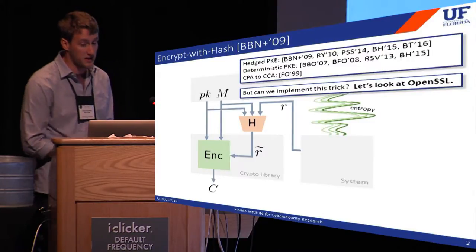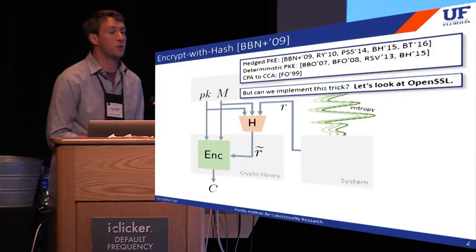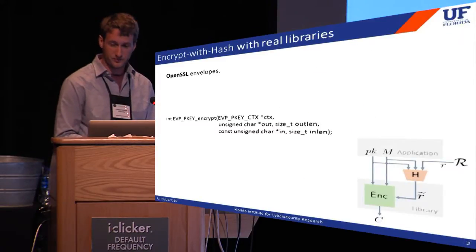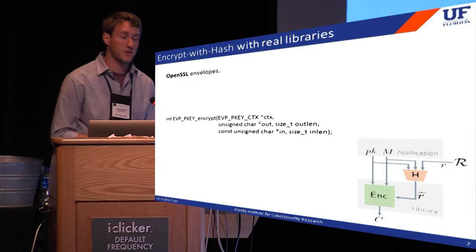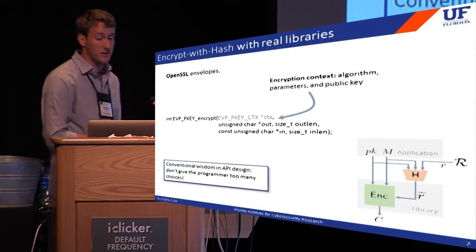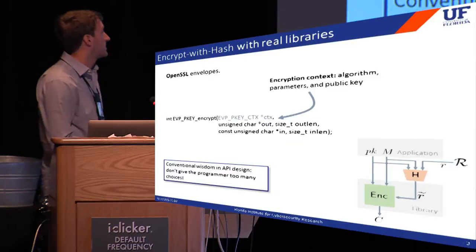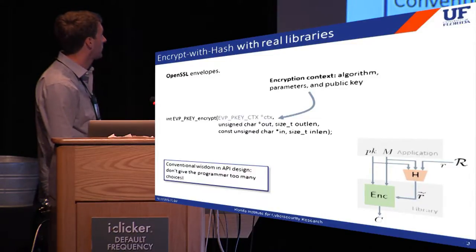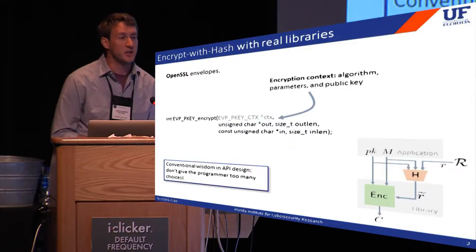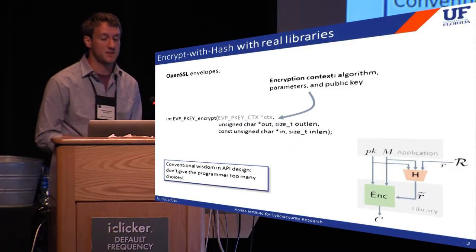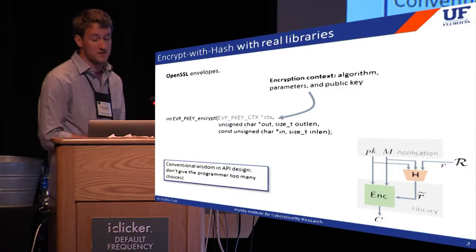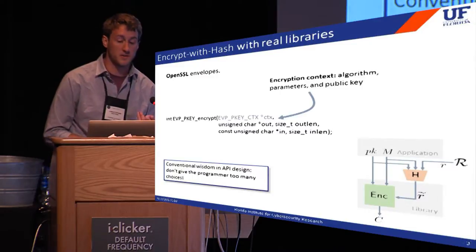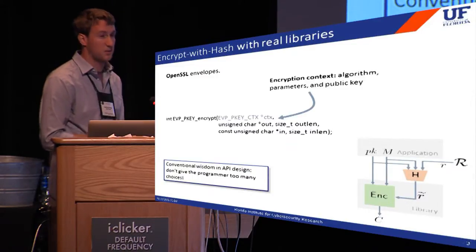To start, we looked at OpenSSL, perhaps the most widely deployed crypto library in use today. At its highest level, OpenSSL provides an abstraction for public key encryption, sometimes called secure envelopes. The first input to this function is the encryption context, which specifies the public key and algorithm. OpenSSL facilitates key generation and management, and it's possible to instantiate this context properly without knowing much about the underlying crypto — great news from a usability perspective. Conventional wisdom in API design is that the programmer should have to make as few security choices as possible.